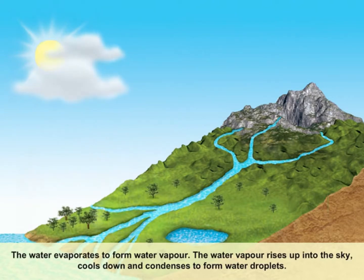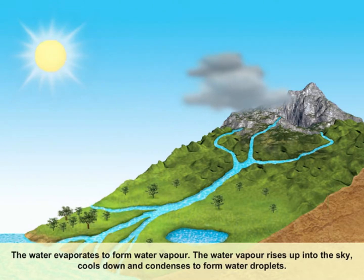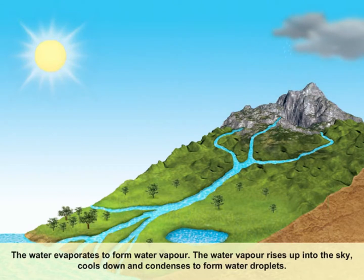The water evaporates to form water vapor. The water vapor rises up into the sky, cools down and condenses to form water droplets.